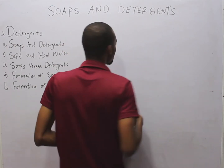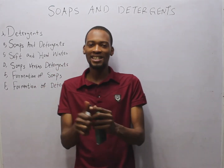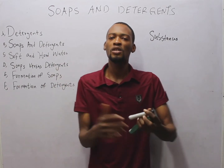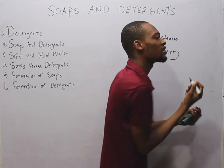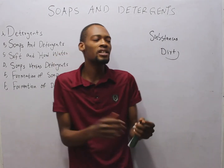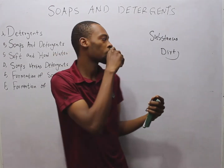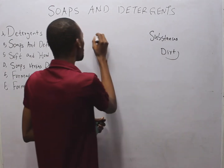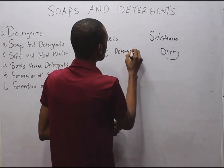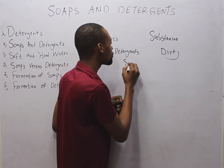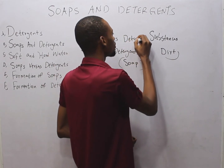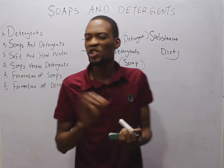Let's start with detergents. What is a detergent? A detergent, or detergents, are substances which, when dissolved in water, have the ability to remove dirt from objects. Any substance which, when dissolved in water, possesses the ability to remove dirt or clean objects. A detergent can be a soapless detergent or a soapy detergent. Instead of saying soapy detergent, we simply say soap. Instead of saying soapless detergent, we simply say detergent.